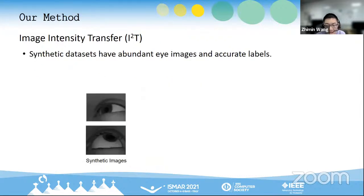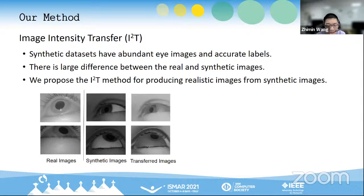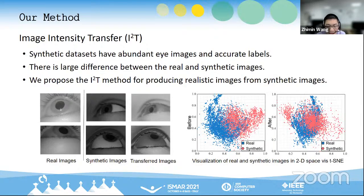We use sufficient synthetic images for training the E2Net. However, there is a large difference between the real and the synthetic images. To solve this problem, we propose the I2T method for producing realistic images from synthetic images. We use dimensionality reduction to visualize the synthetic and real images in 2D space before and after I2T. The comparison shows that I2T shortens the gap between synthetic and real images.